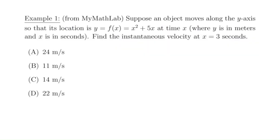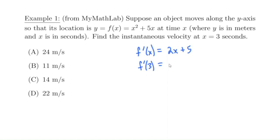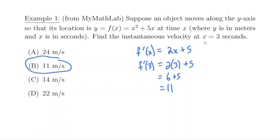Let's do two examples straight out of MyMathLab. Suppose an object moves along the y-axis so that its location is f of x equals x squared plus 5x at time x, where y is in meters and x is in seconds. Find the instantaneous velocity at x equals three seconds. We need to find f prime of three. The derivative f prime of x is 2x plus 5. So f prime of three is 2 times 3 plus 5, which is 6 plus 5, which is 11. The answer is 11 meters per second — that's the velocity at time x equals 3 seconds.